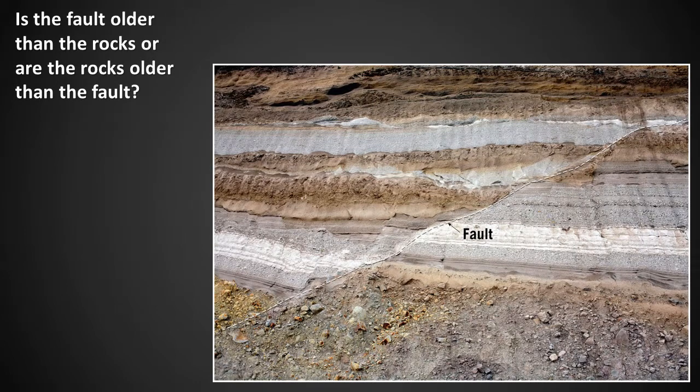Here we see some sedimentary rocks that have been cross-cut by an earthquake fault. Is the fault older than the rocks, or are the rocks older than the fault? The rocks are older than the fault, since they needed to exist before the fault could offset them. This is an example of cross-cutting relations.